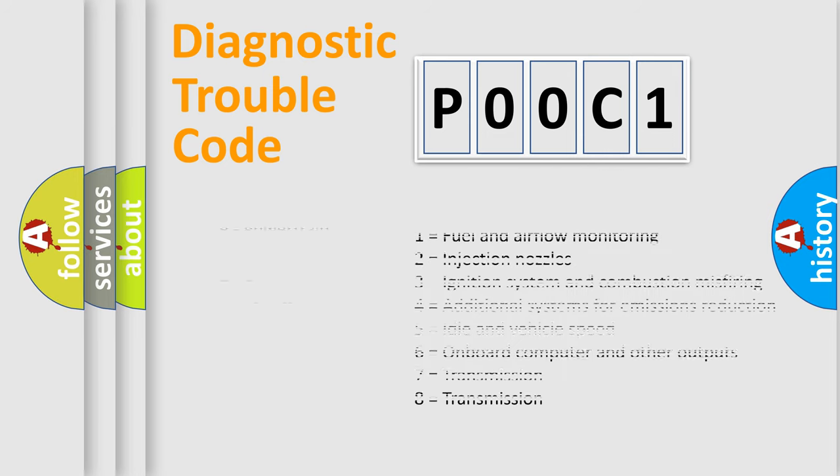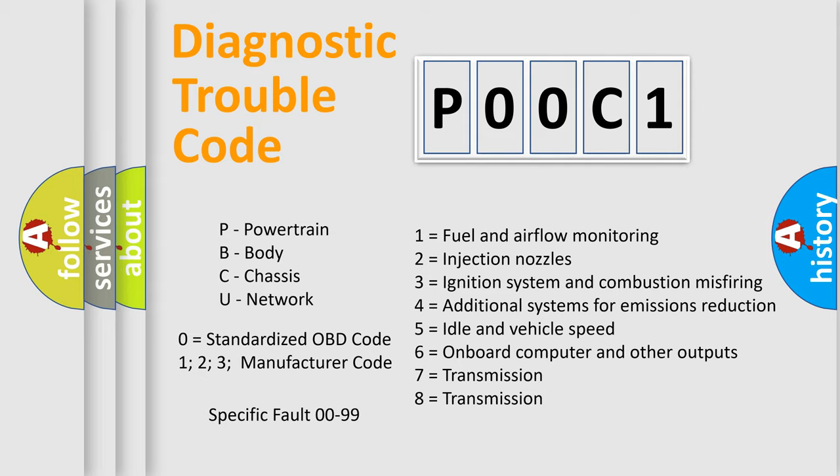Only the last two characters define the specific fault of the group. Let's not forget that such a division is valid only if the second character code is expressed by the number zero.